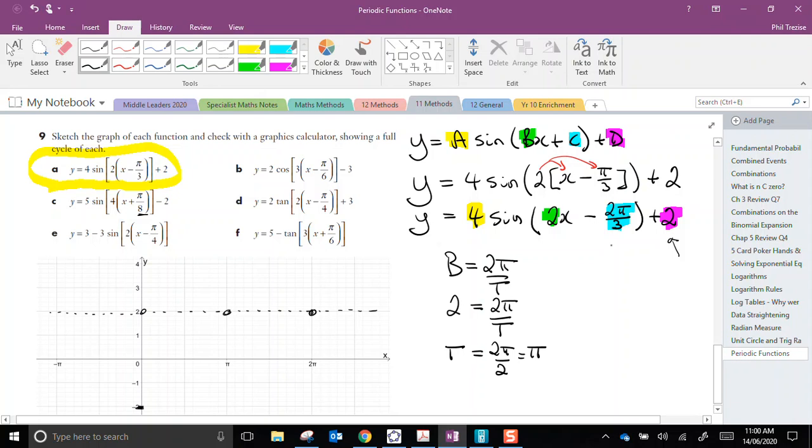Now, this is the really important bit here. The horizontal shift, remember, is c divided by b. We have 2 pi over 3, divided by our value of b was 2, so that's back to pi over 3. That's a horizontal shift, a third of a pi.